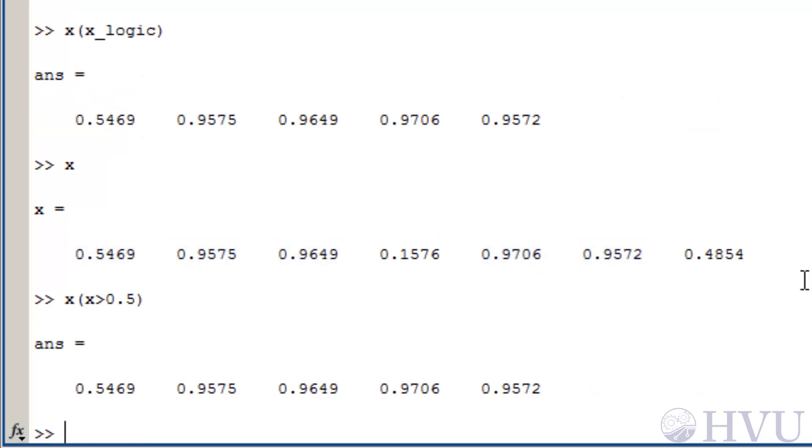Logical operators can be included in these expressions. For example, to get the values of x that are between 0.25 and 0.75, I can type x of x greater than 0.25 ampersand for AND x less than 0.75. The values of x that are both greater than 0.25 and less than 0.75 are returned.